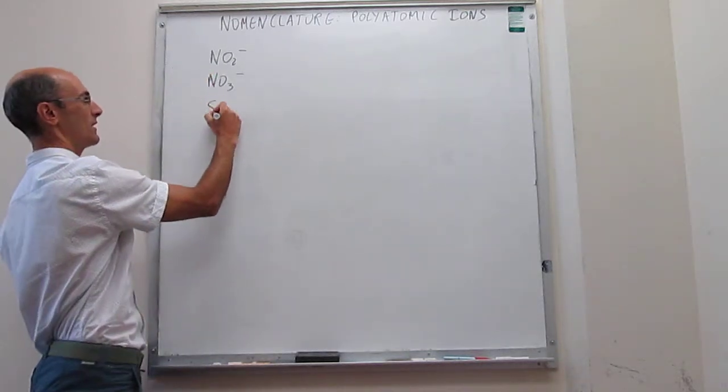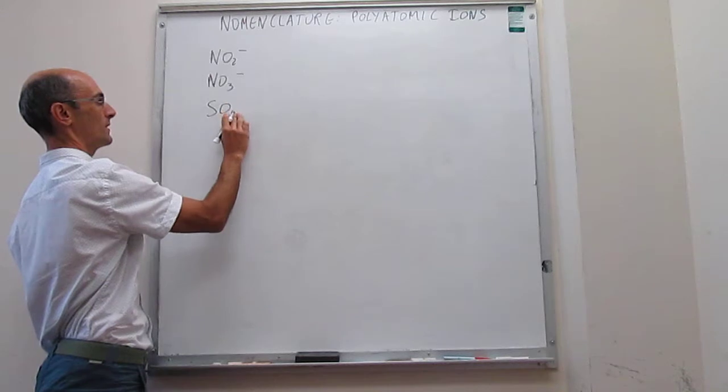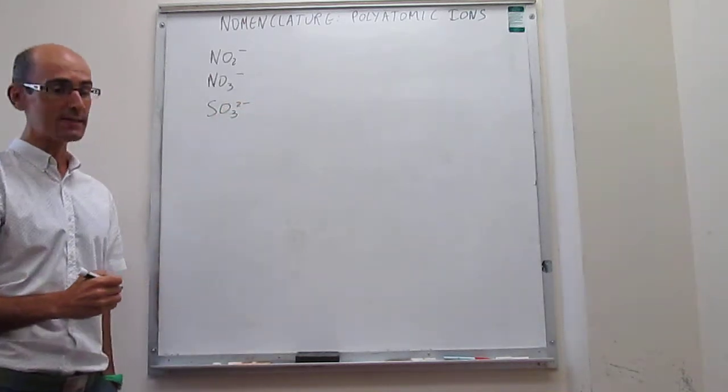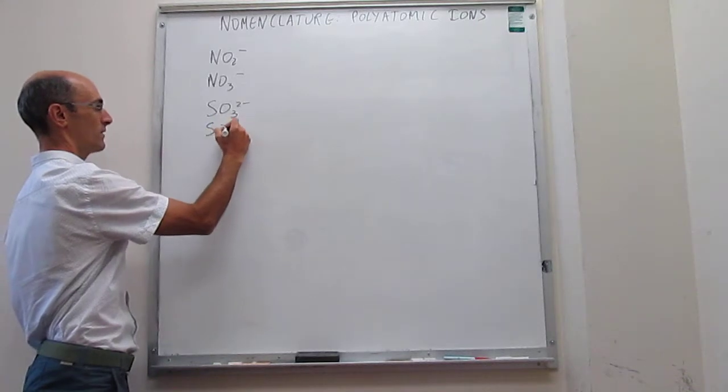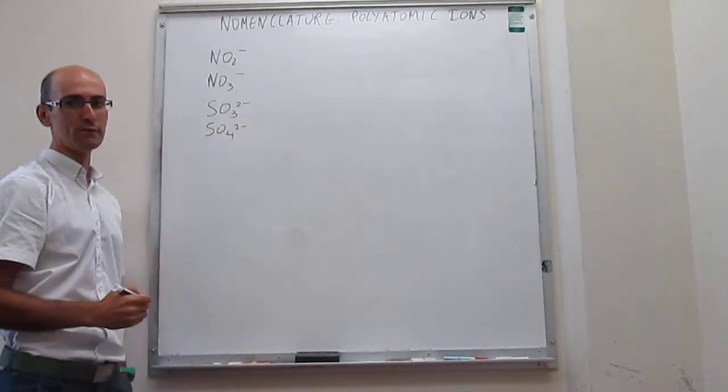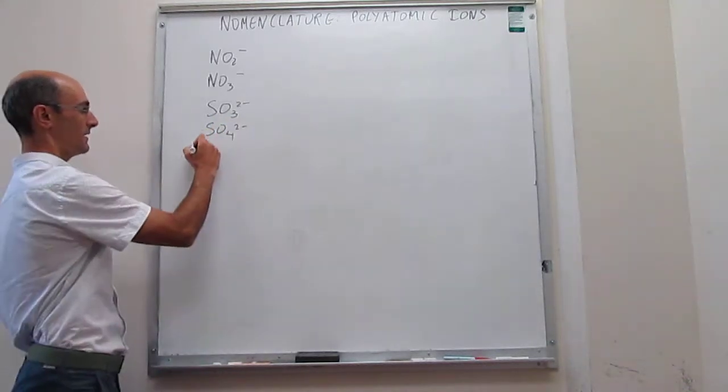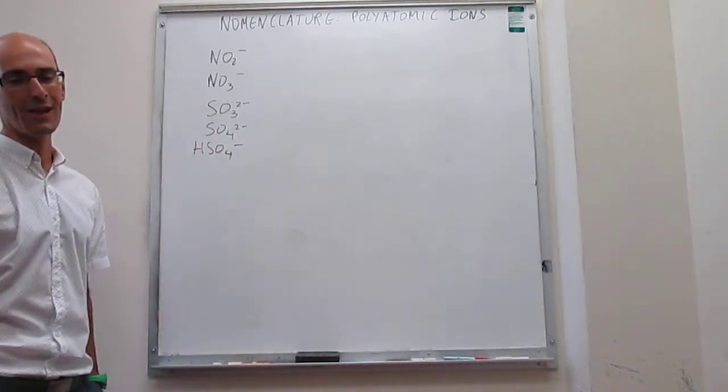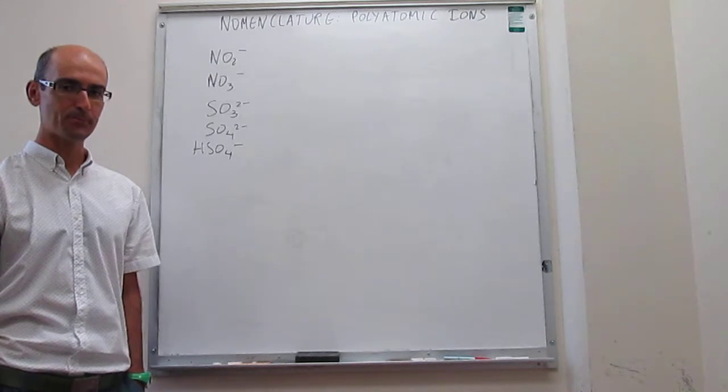Then we have SO3-2- that is sulfite. SO4-2- that is sulfate. And then HSO4- which is called hydrogen sulfate.